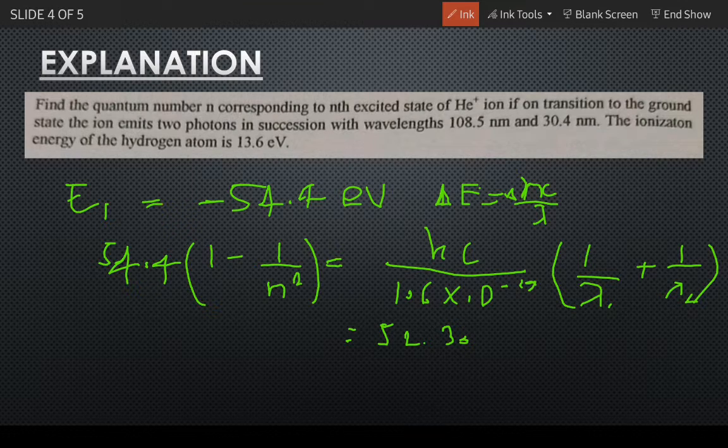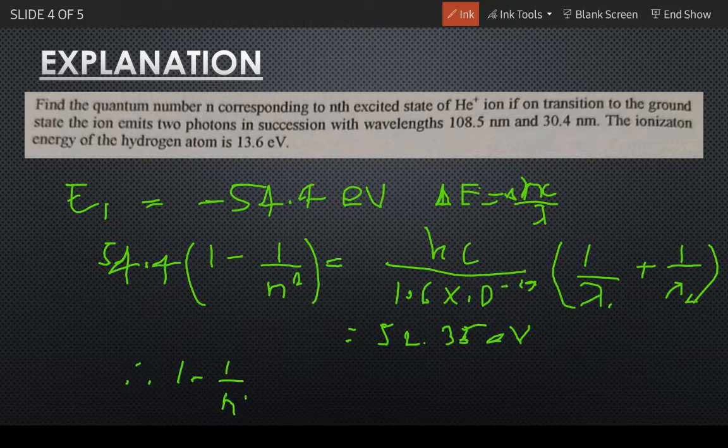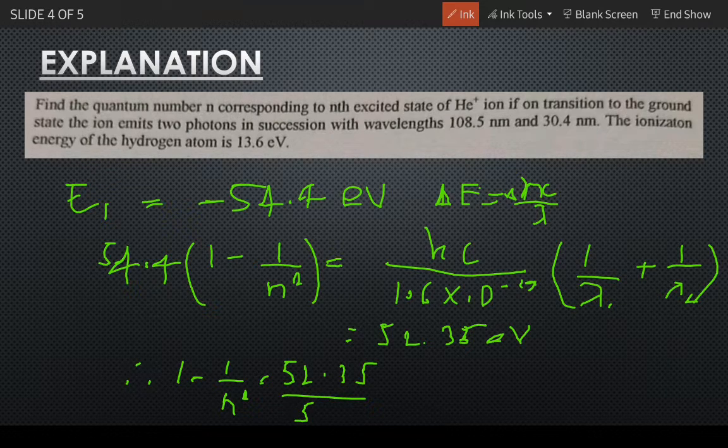52.35 electron volts. So therefore 1 minus 1 by n squared equals to 52.35 upon 54.4, which comes out to be n equals to 5.